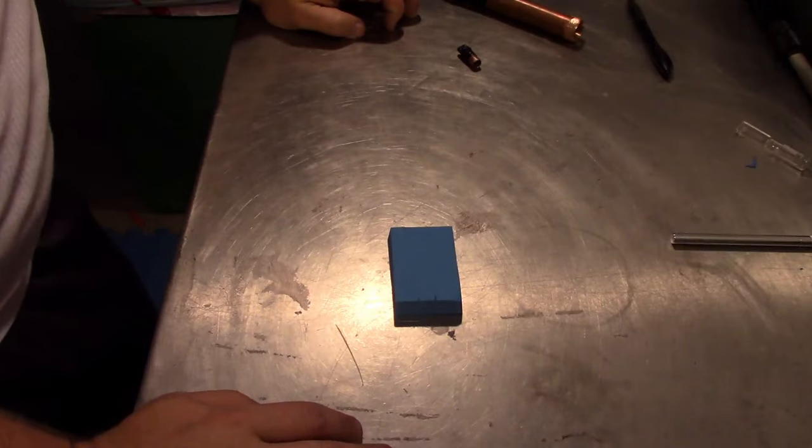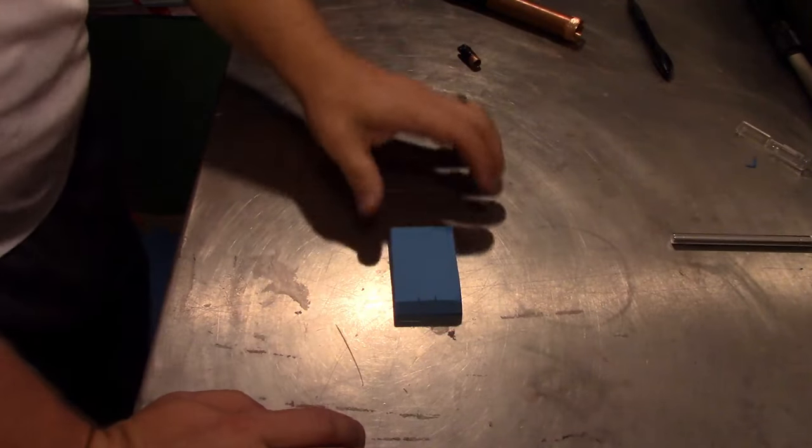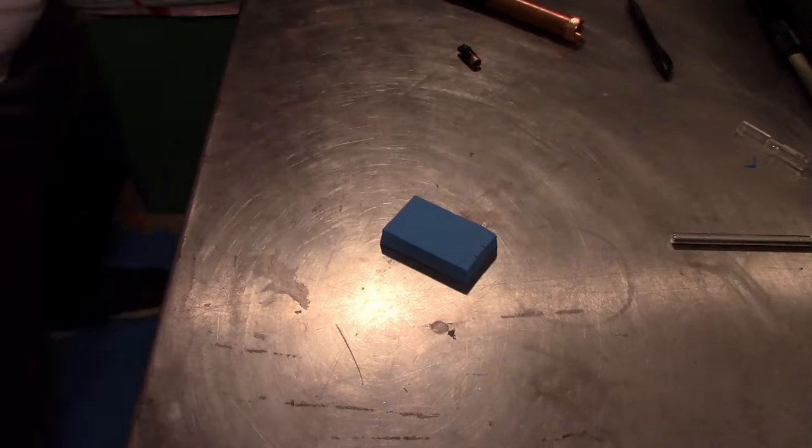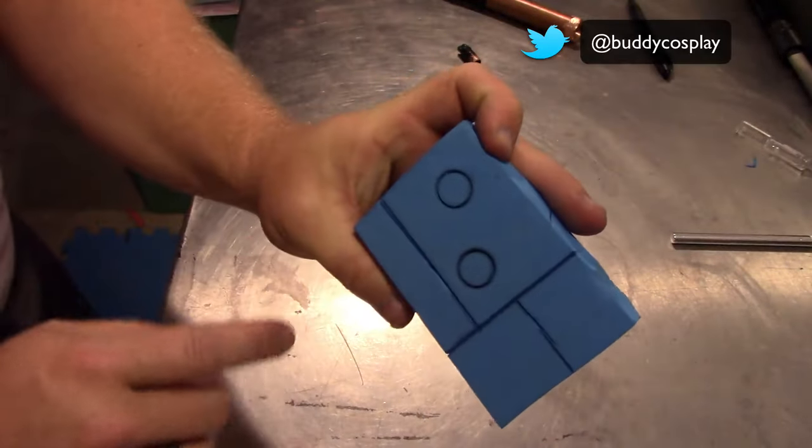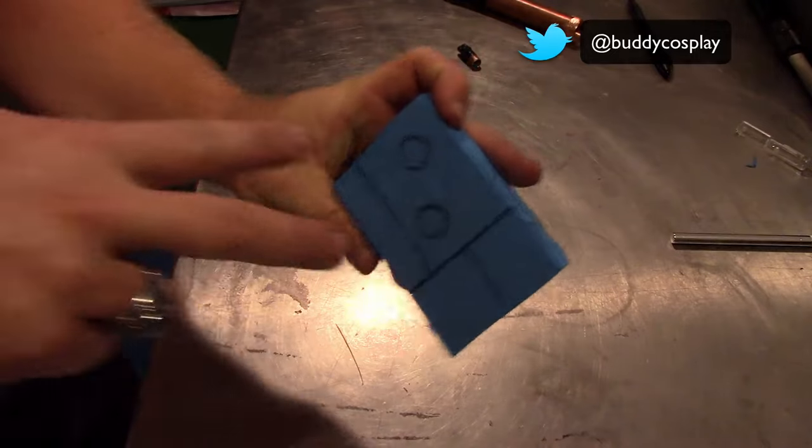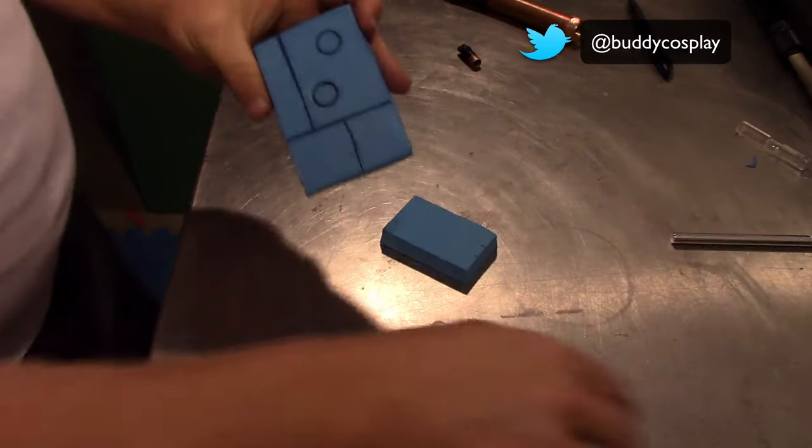Today we're going to talk about making perfect circles or holes in your foam. In a previous video, we've shown you how you can make good hole detail. But we're going to go a step further and punch these holes out and do things with them.